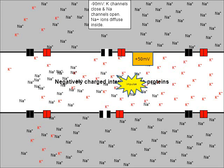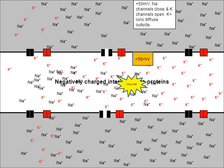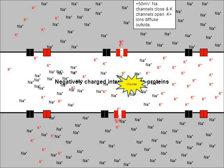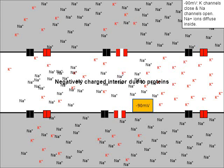Just like last time, when the charge reaches positive 50, the black sodium channels are going to close and the red potassium channels are going to open. Right now the internal charge is positive 50, but when all those potassiums exit, it's going to lose the positive charge, dropping all the way down to negative 90 millivolts. Around negative 90 millivolts the red potassium channels close, and around negative 40 millivolts the next set of black sodium channels are going to open.